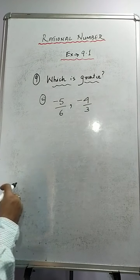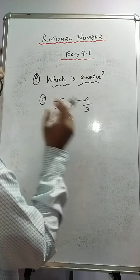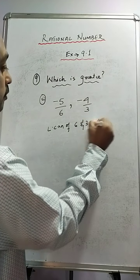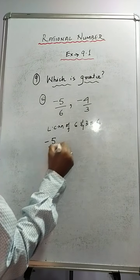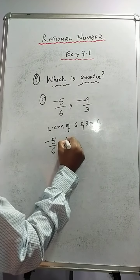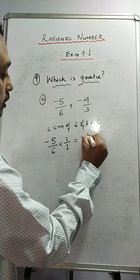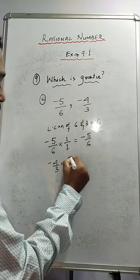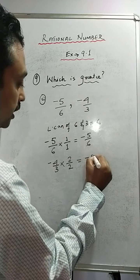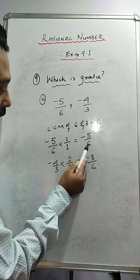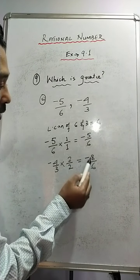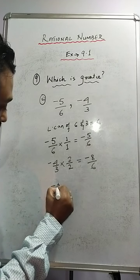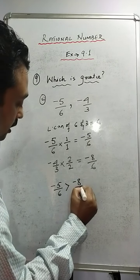Sum number 2: we have minus 5 by 6 and minus 4 upon 3. We do the same thing — the LCM of 6 and 3 is 6. For minus 5 by 6: 6 divided by 6 is 1, so multiply 1 with both numerator and denominator to get minus 5 upon 6. For minus 4 by 3: 6 divided by 3 is 2, multiply 2 with both to get minus 8 upon 6. Now compare the numerators — minus 5 is greater than minus 8.